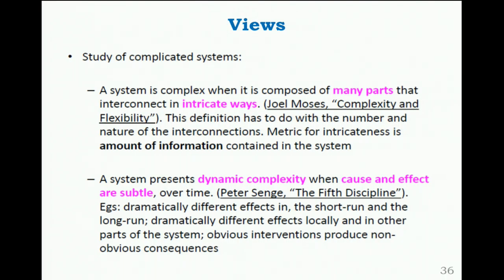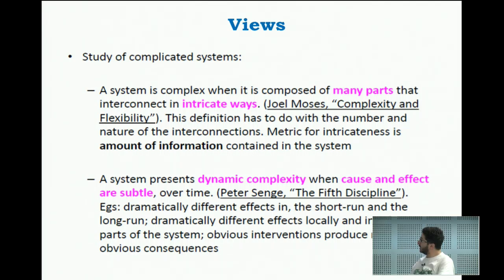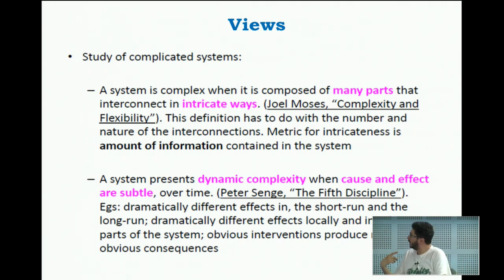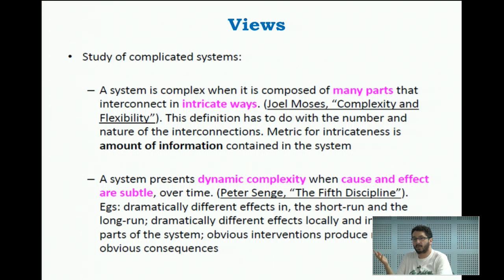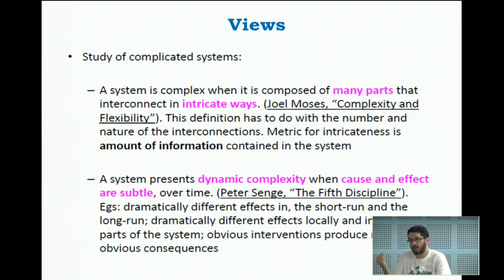There are a few views about what a complex system is. Some people say that a system is complex when it has many parts and they are interconnected in an intricate way. Here we focus on the number of parts and how they interconnect. In my opinion, the number won't tell you so much — it's more of an indication. What is more interesting is how the different parts of the system are related. For example, a collection of a thousand teacups — is this system complex? Does it do anything interesting? It's not even a system, really. So the number itself won't tell you too much.